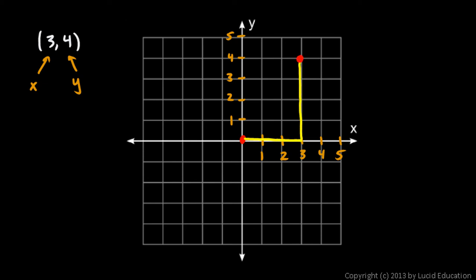And that puts us right here. So this point, that is the point (3, 4). That's the answer to this. When it says plot the point (3, 4),